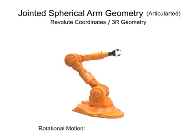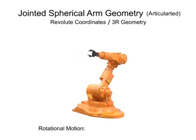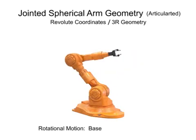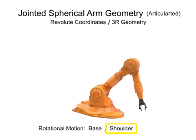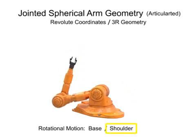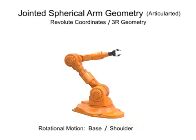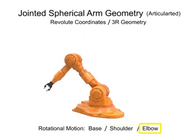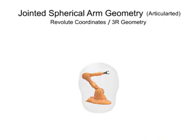Left and right movements are provided by rotation at the base. Horizontal movement is provided by rotation at the shoulder. And vertical movement is provided by rotation at the elbow. Except for very close to the body, the work envelope of a jointed spherical robotic arm is almost entirely spherical.